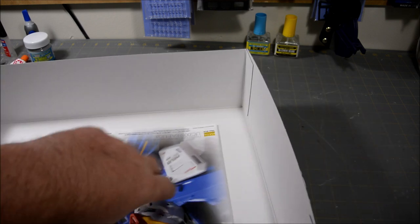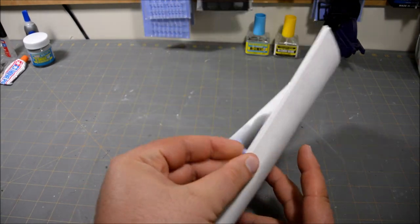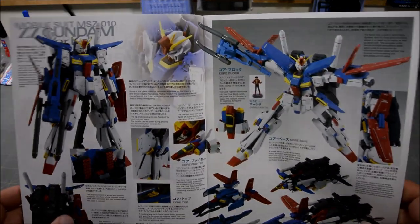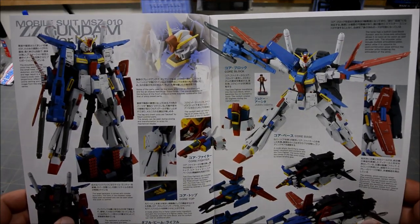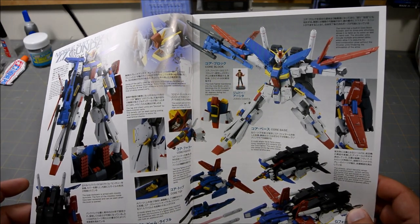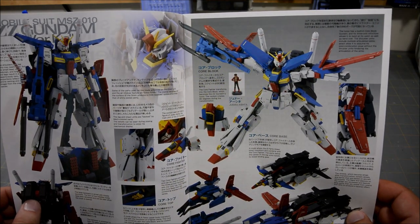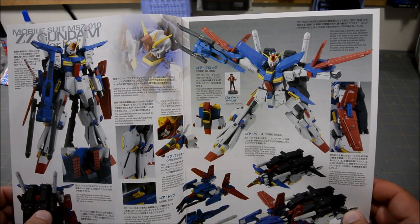And last but not least is the manual. So we got a nice headshot of the Double Zeta here. And then like I was mentioning earlier, all that good info that previously for those of us who don't speak Japanese we just have to look at the pretty pictures and pretend that we can read the Japanese.